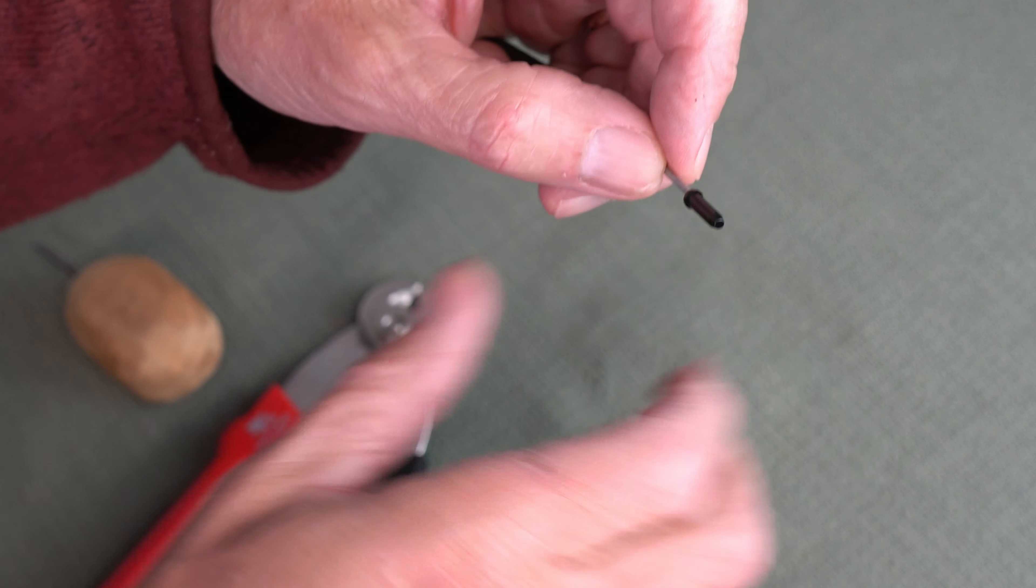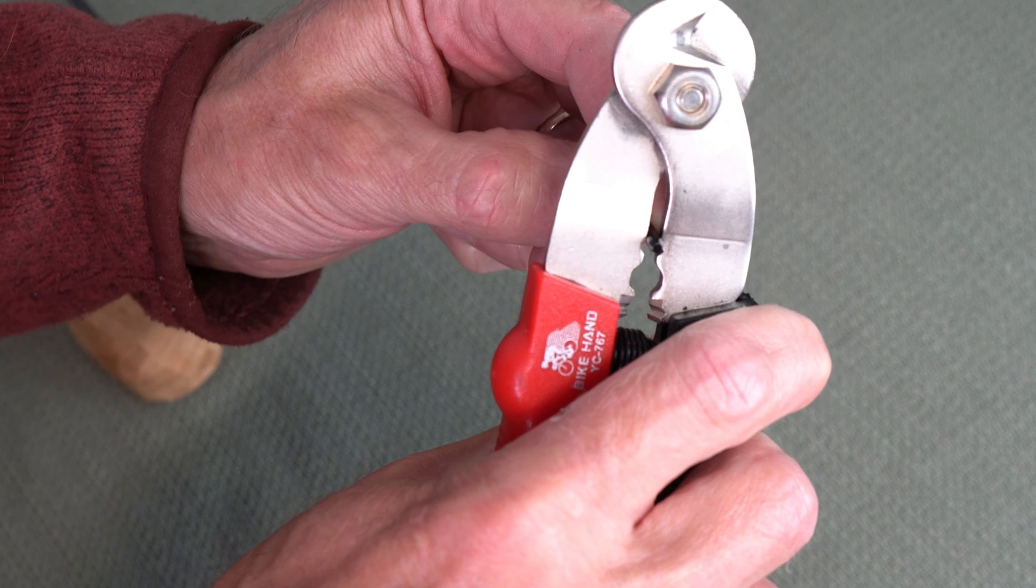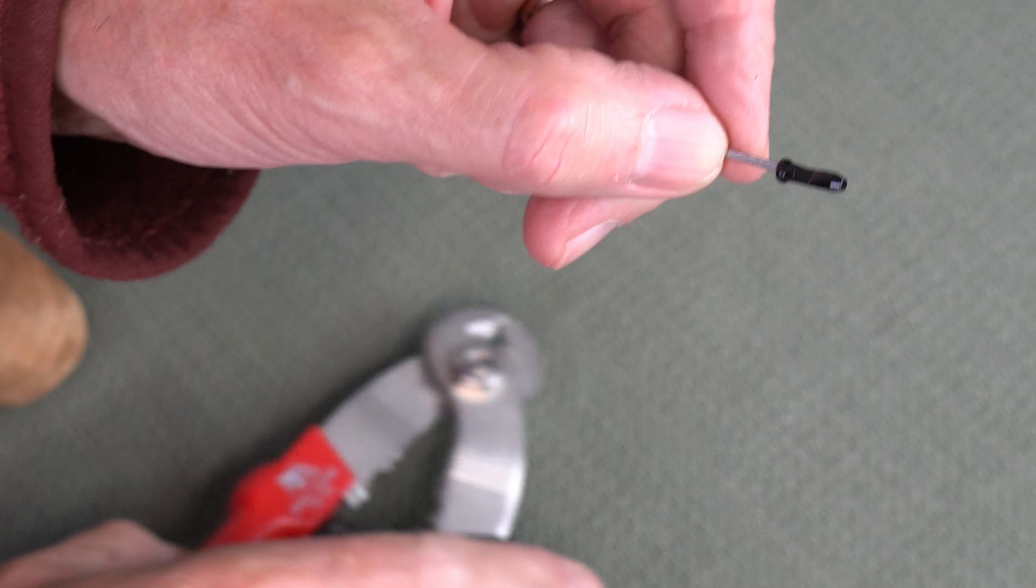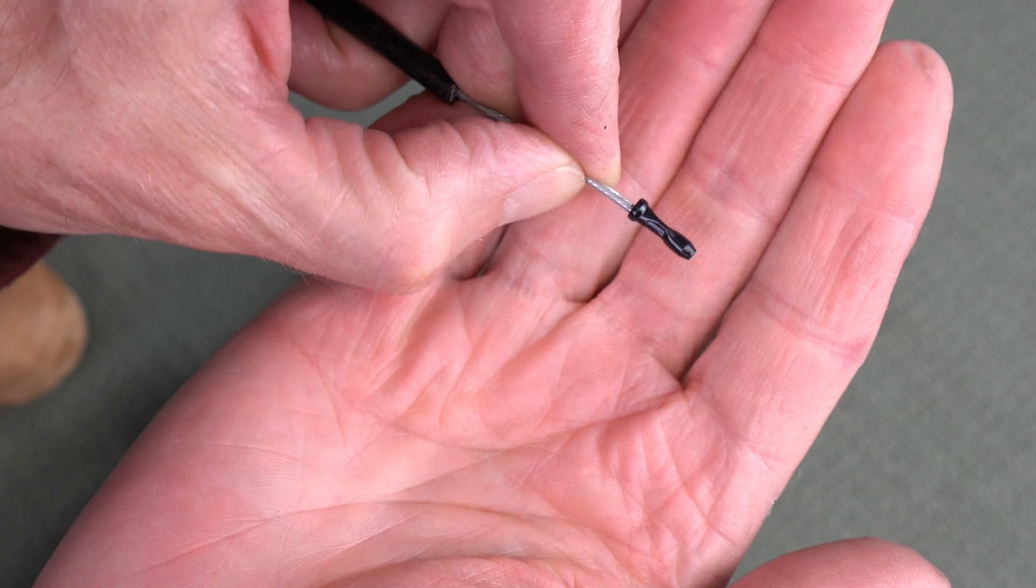Get your cable ends, put it on, and there's a built-in crimper on these as well. Just put it in the groove, clamp it down, and you've got your crimper end to make sure everything stays nice and clean.